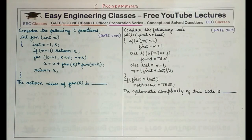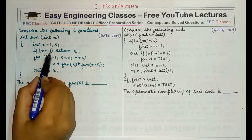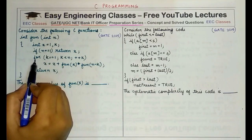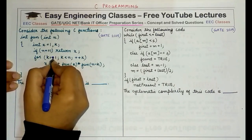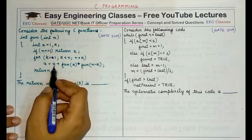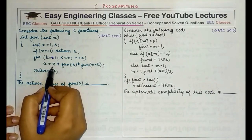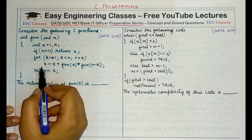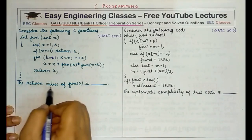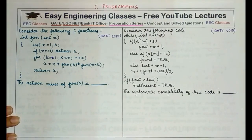The first question says: consider the following C function — int fun(int n). x is equal to 1, k is another variable. If n equals 1, then return x. For k equal to 1, k less than n, k++, then x is equal to x plus fun(k) multiplied by fun(n minus k), and after the loop, return x. The return value of fun(5) is to be found.